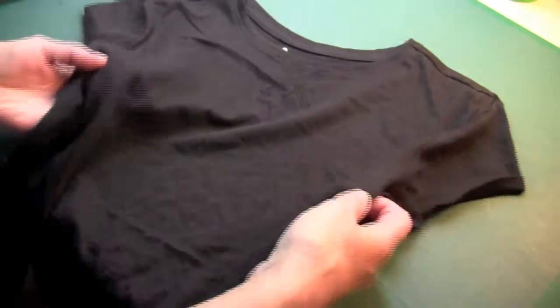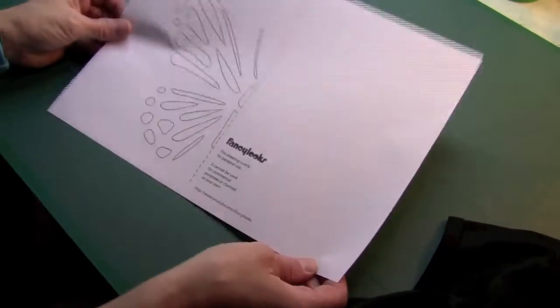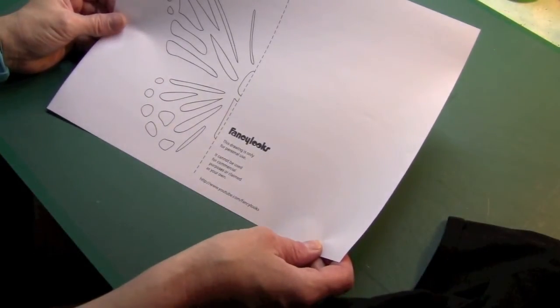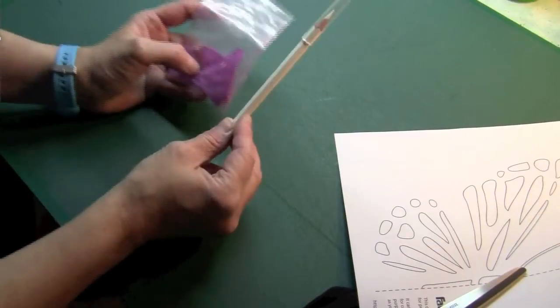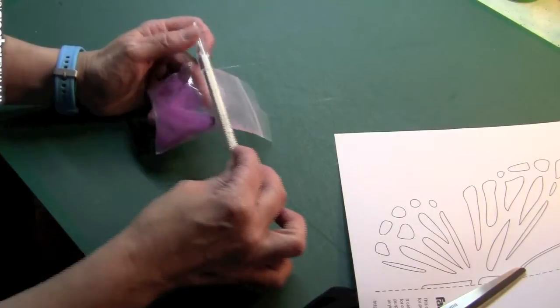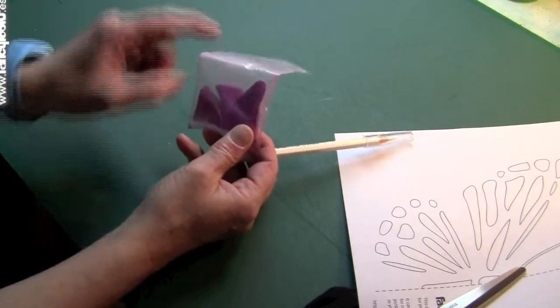You will need a t-shirt, the color of your choice. This template printed, you can download it with the link in the description box of this video. A scalpel, something with which you can trace on the t-shirt, this kind of pencil special for clothes or this kind of chalk.